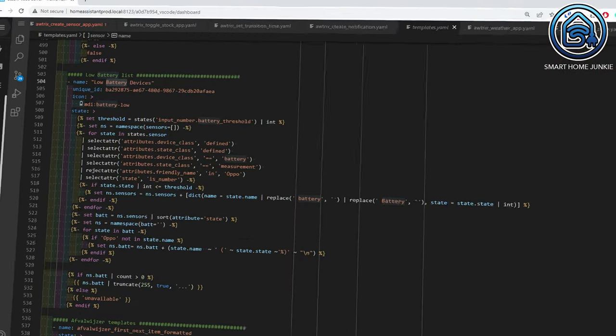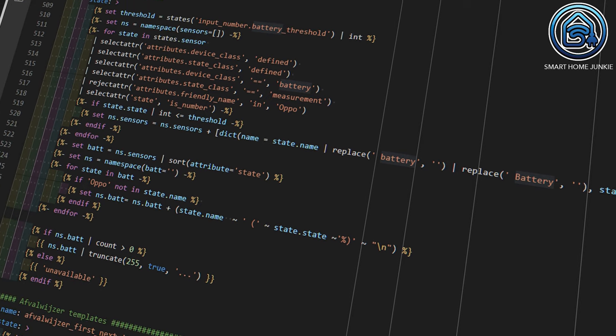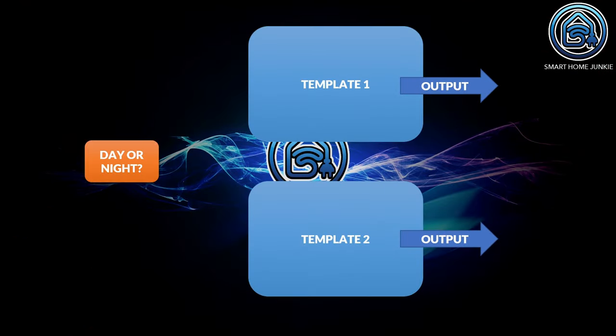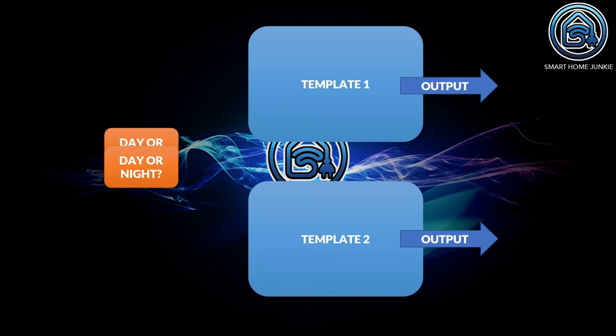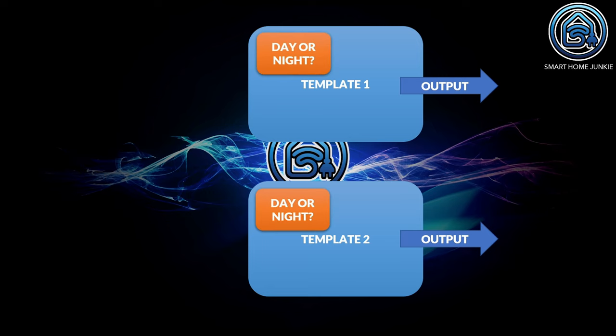For instance, I have created a template that shows a list of all the device batteries that need to be replaced soon. Now, when you have created a lot of templates, it might be that a couple of them use the same logic. Let's say you have multiple templates that check if it is day or night and return a value based on that. What you can do now is create a macro that tests if it is day or night and returns the value day or night. You can then call this macro in other templates and return a state based on if it is day or night. So you do not have to write the same template code over and over again.